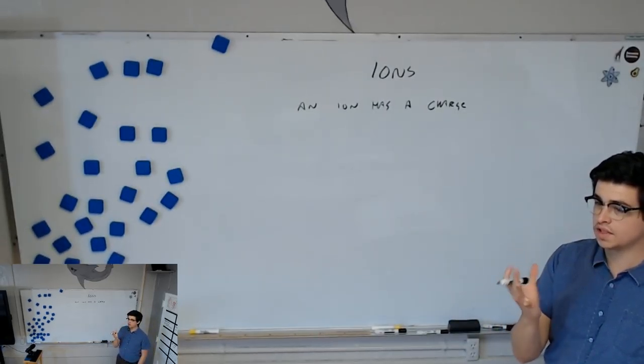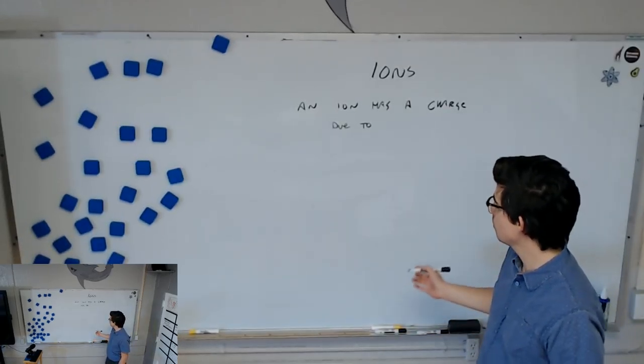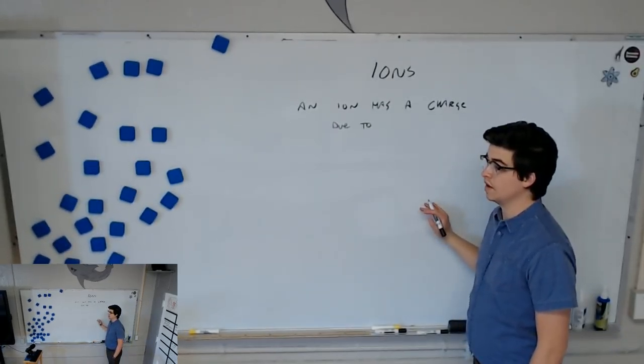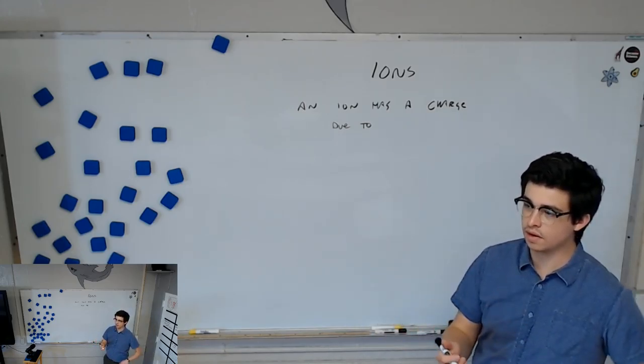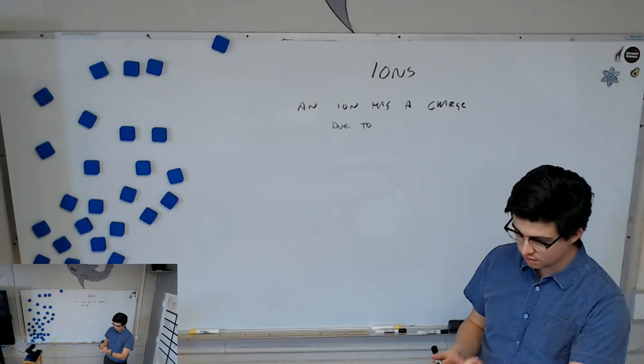What about the way the subatomic particles are makes an ion have a charge? Due to what? So if it has a positive charge, what do we know about its subatomic particles? What are the subatomic particles? Remind me. Protons, neutrons, electrons.